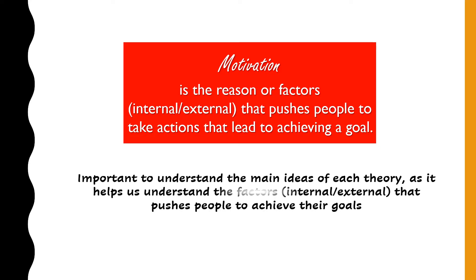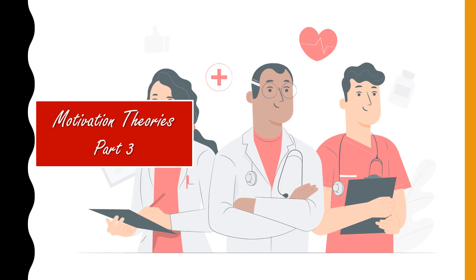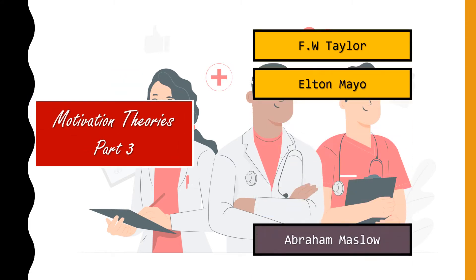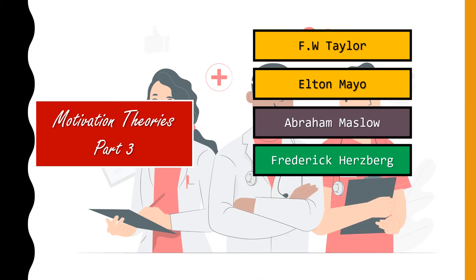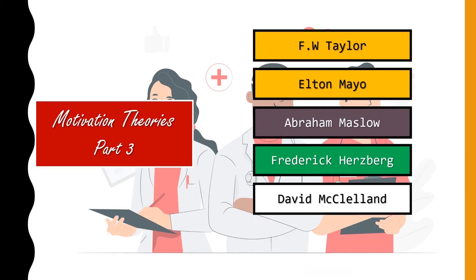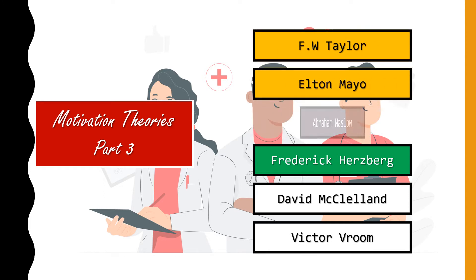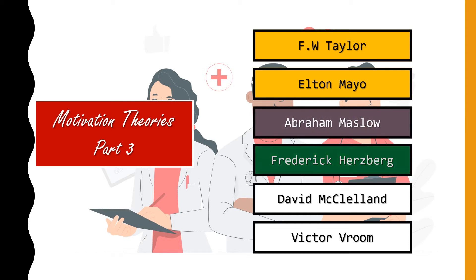The theories are important to help understand what those factors are. Our list of researchers includes Taylor, Mayo, Maslow, Herzberg, McClelland, and Vroom. We have covered Taylor, Mayo, and Maslow in part two. Today we will look at Frederick Herzberg.